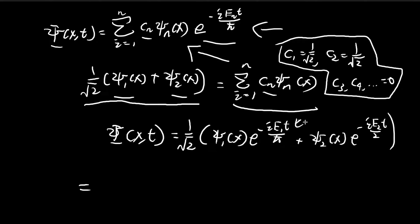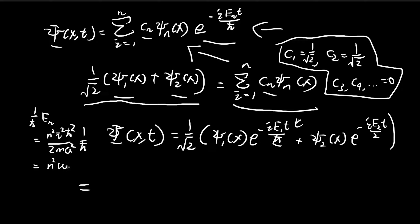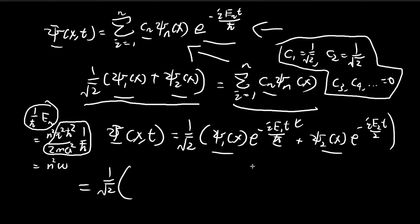Now I'm going to simplify the expression by defining a new symbol. David Griffiths proved that the energy levels of the infinite square well follow a specific formula, and there's also a 1 over reduced Planck constant expression. I'm going to let all of that be equal to n² omega, defining omega to simplify things so I don't have to write it out each time. The stationary states are square root of 2 over a times sine of n pi x over a, so for n=1 we get sine of pi x over a with exponent negative i omega t.